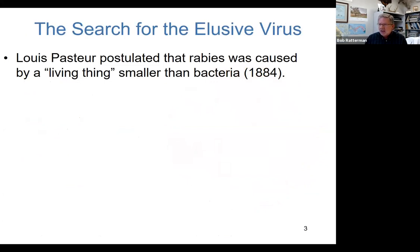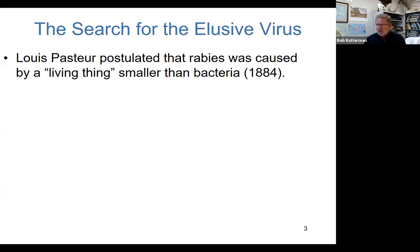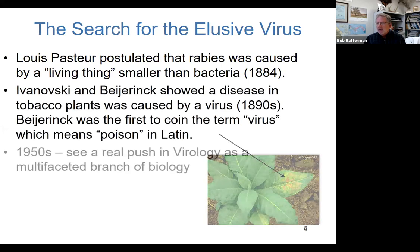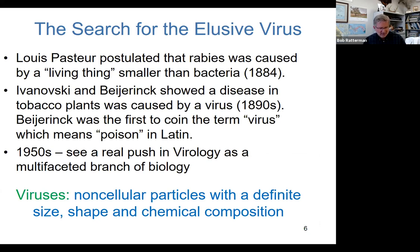We also talked back in one of the earlier chapters about Pasteur and his role in putting to bed the biogenesis theory. He was also instrumental in suggesting that rabies might have been caused by something different than bacteria. Little did he know it was a virus. Virology came into its own as a branch of biology in the 50s and continues to be very important, as evidenced by our current pandemic.